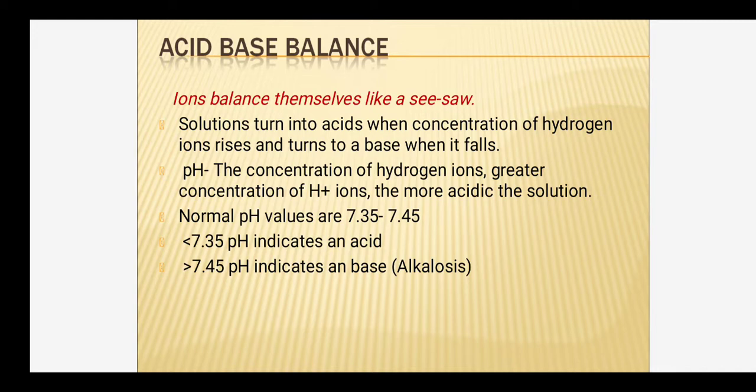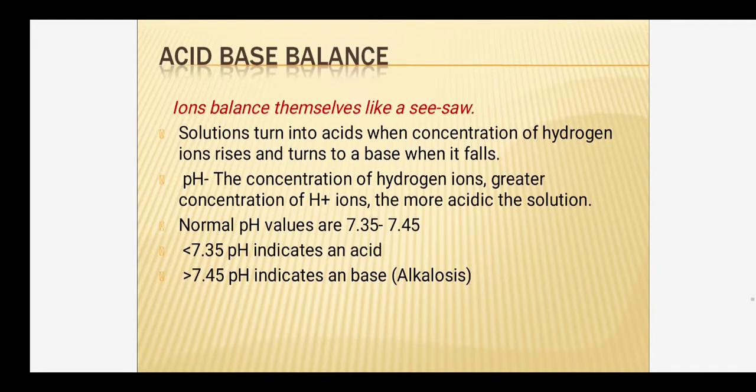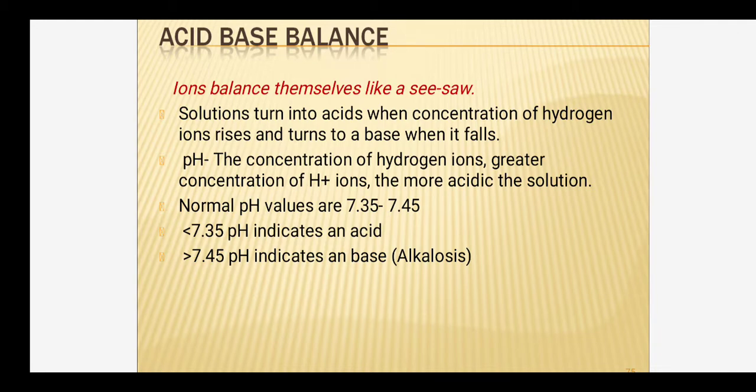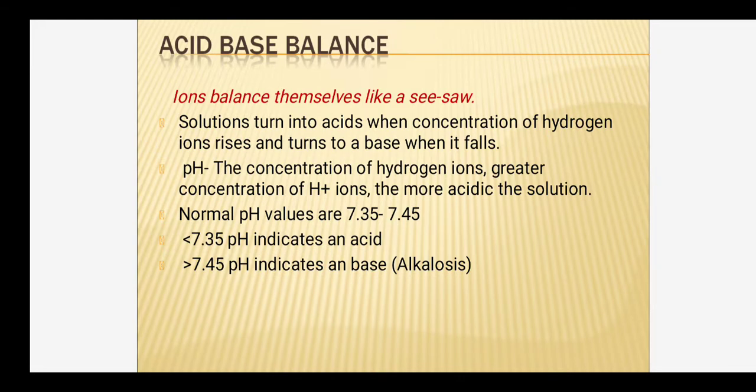The blood pH is 7.35 to 7.45. When the pH falls below 7.35, the body or blood is acidic. And when it is above 7.45, it is an alkalotic state or alkalosis occurs.